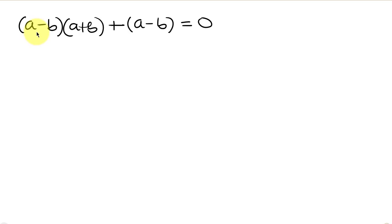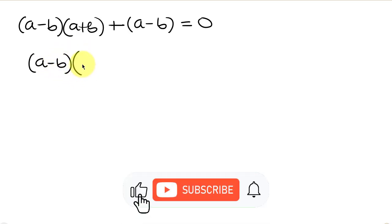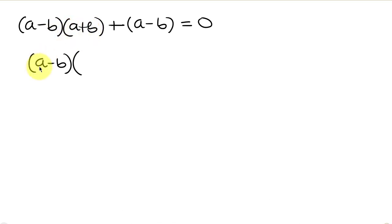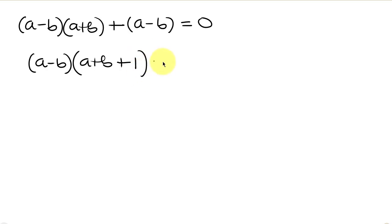Notice that a minus b is common, so we can factor out a minus b and open a bracket. We get a minus b times a plus b plus 1 equals 0.